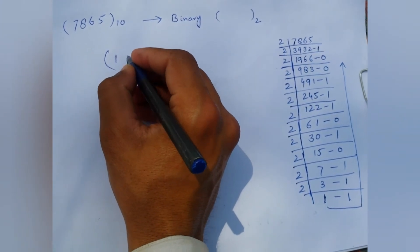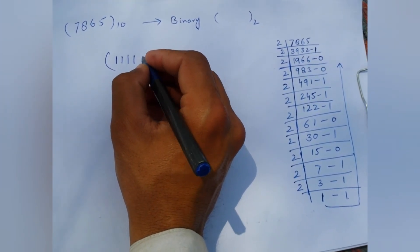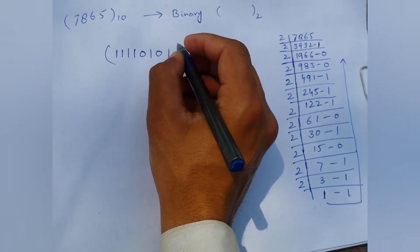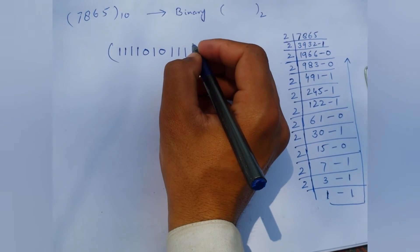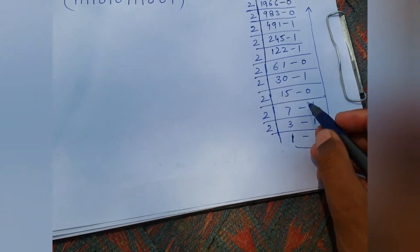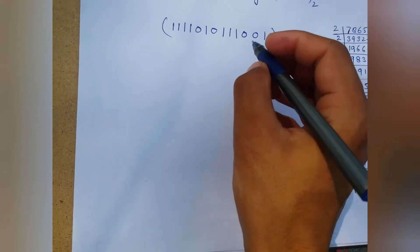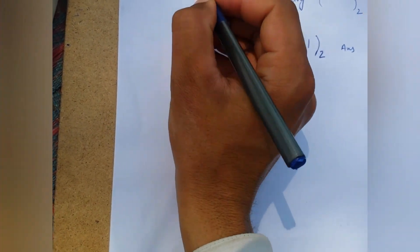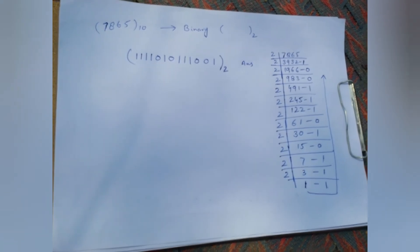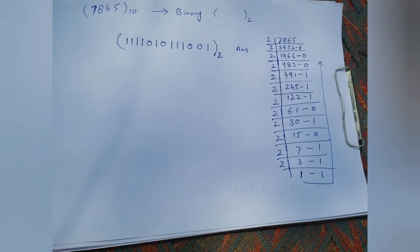We now write the answer from downward to upward. Our answer is 1111101011000001 base two. That is the simple process to convert any decimal number into binary number. Hopefully you like it, thanks for watching.